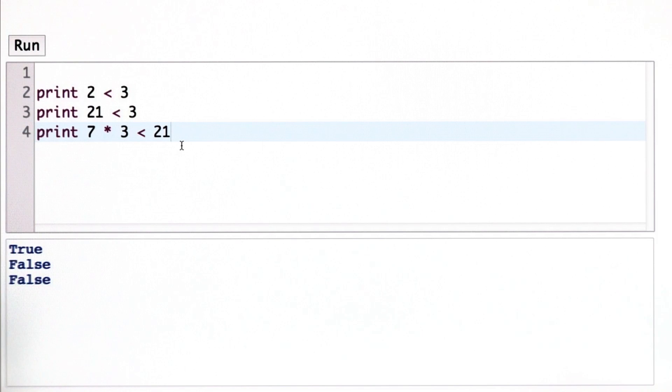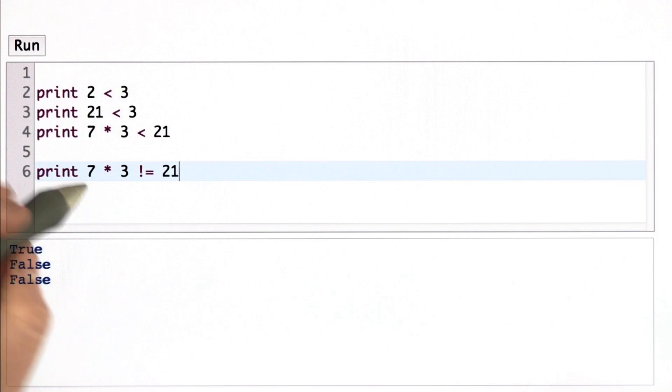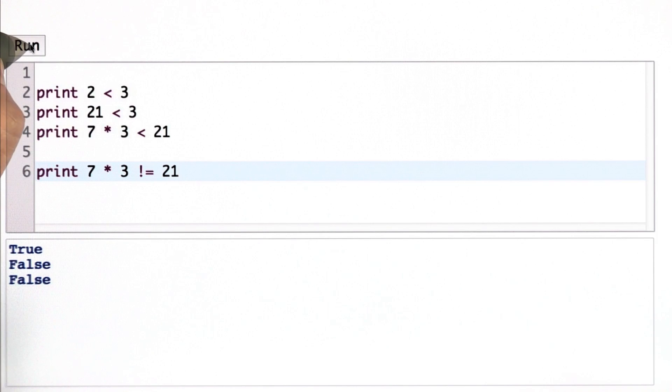Another comparison operator we can use is not equal to, so exclamation point equal means not equal to. So 7 times 3 not equal to 21 is false because 7 times 3 is equal to 21.